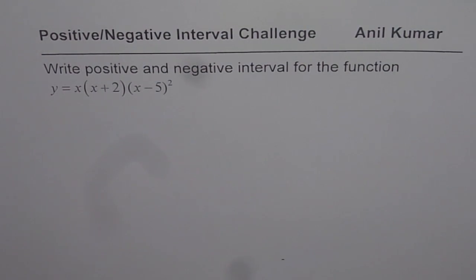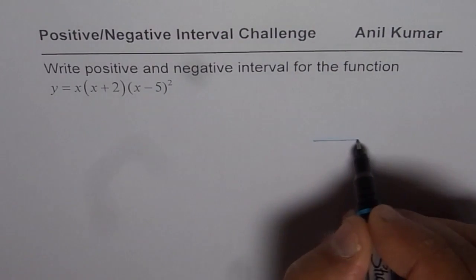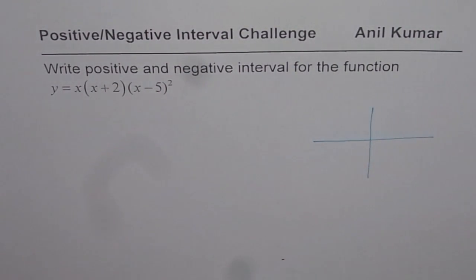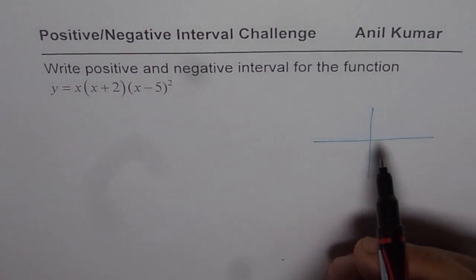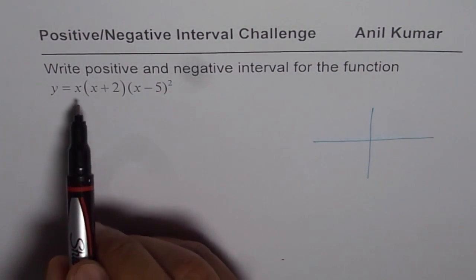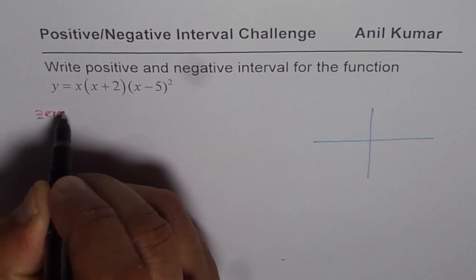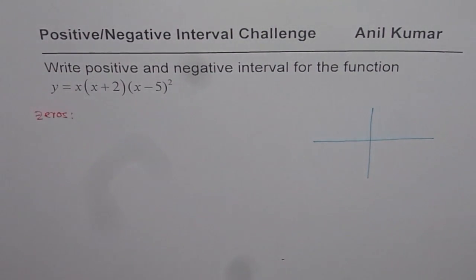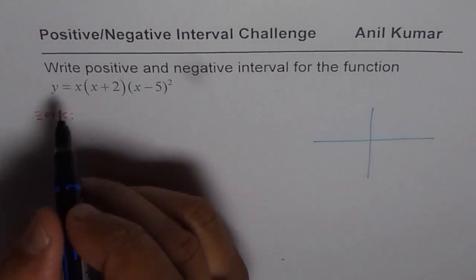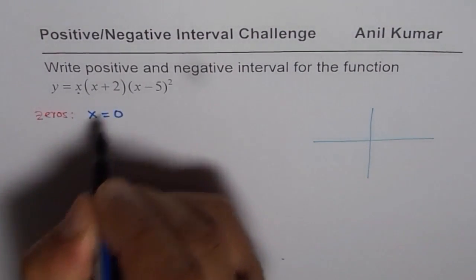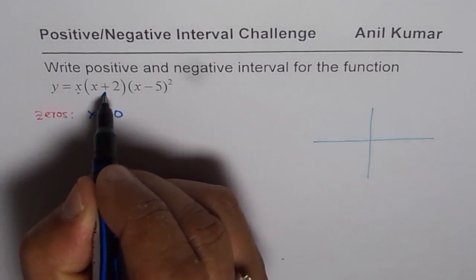Now I prefer to sketch a polynomial of this kind and then write down the end behavior. So let me just give you a sketch and also tell you how to sketch such polynomials. We will start with zeros. So we have three zeros here. The first one is because of this factor x, it is at x equals 0.